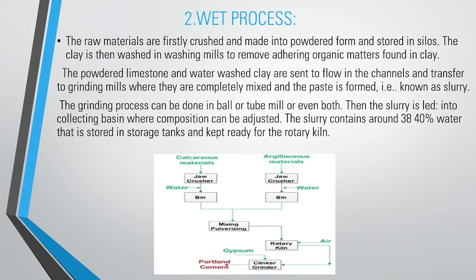Wet Process. The raw materials are first crushed, made into powder form, and stored in silos. The clay is washed in washing mills to remove organic matter. The powdered limestone and water-washed clay are sent to flow in channels and grinding mills where they are completely mixed, forming a paste known as slurry. The grinding can be done in ball or tube mills or both. The slurry is led into a collecting basin where composition can be adjusted. The slurry contains around 30–40% water and is stored in storage tanks, kept ready for the rotary kiln.